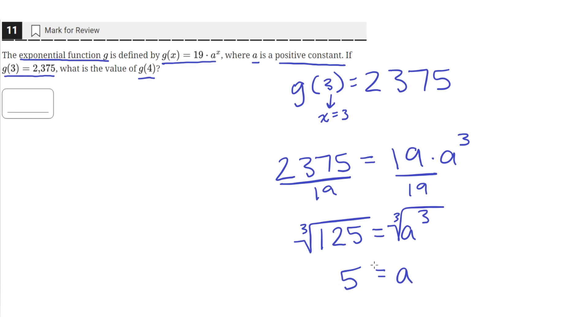So now we can plug this into the original equation. That means g of x is actually equal to 19 times 5 raised to the x power.